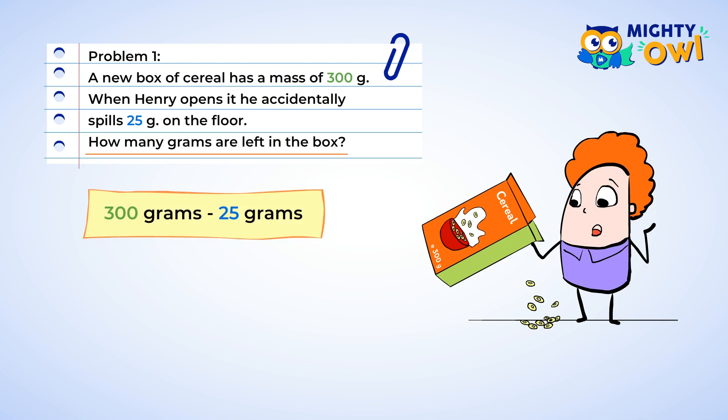Now, we can do this. Looks like we need to borrow, and we need to borrow all the way from the hundred. Well, one hundred is ten tens. So we need to borrow one of the tens to make ones, and that leaves us with two hundreds, nine tens, and ten ones. All right, that looks better. Now, ten minus five is five. Nine minus two is seven. So Henry is left with 275 grams of cereal.